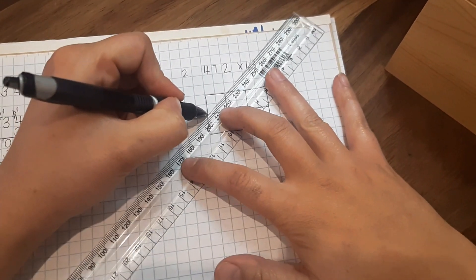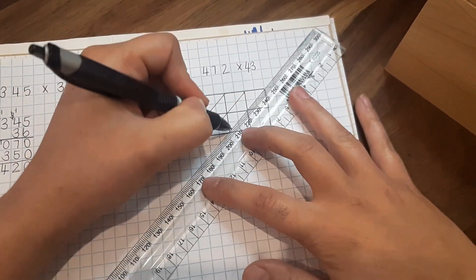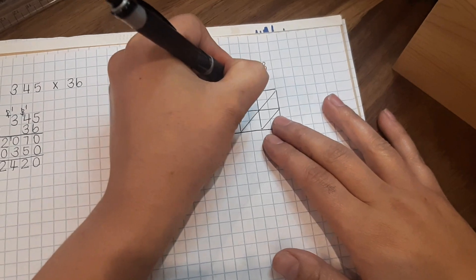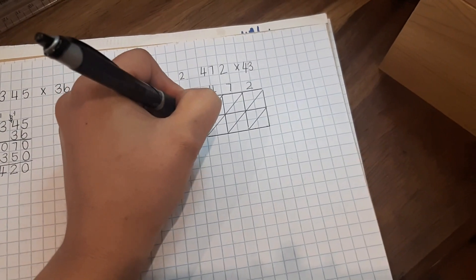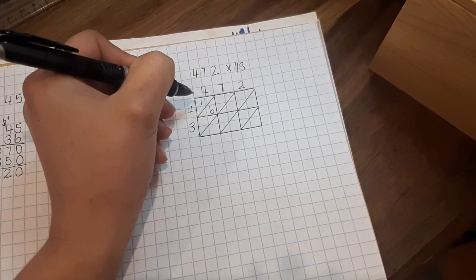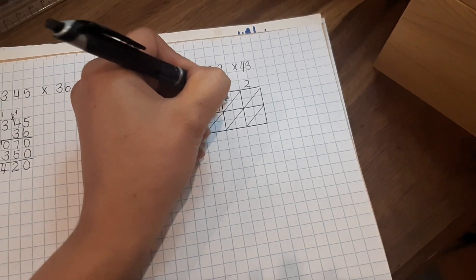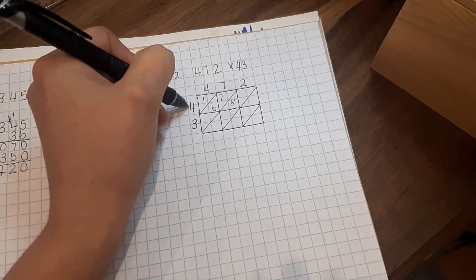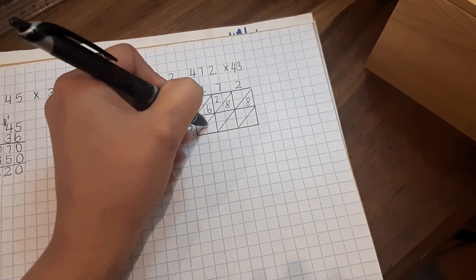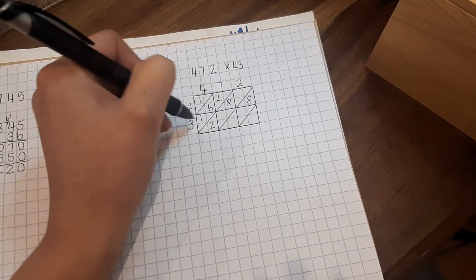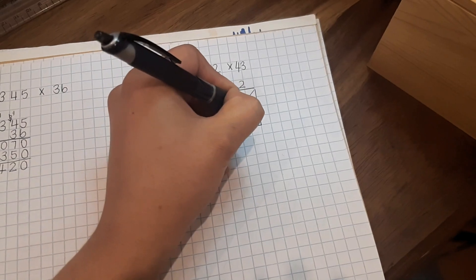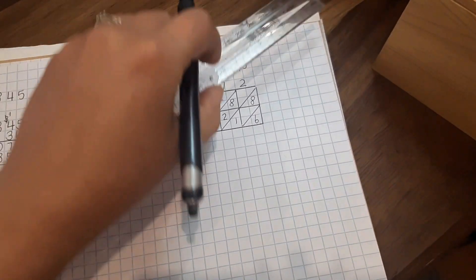Don't try and cramp it up into a small space, much easier to make a mistake like that. Diagonal lines. 4, 7, 2, and 43. 4 times 4 is 16, 7 times 4 is 28, 4 times 2 is 8, 4 times 3 is 12, 7 times 3 is 21, 3 times 2 is 6.